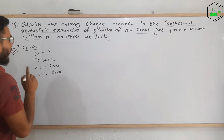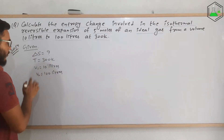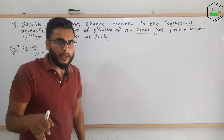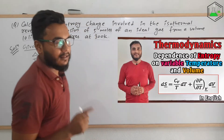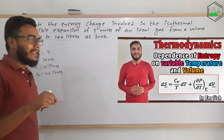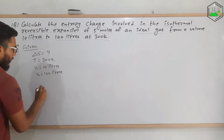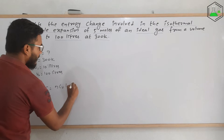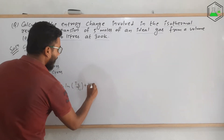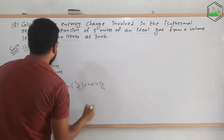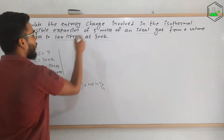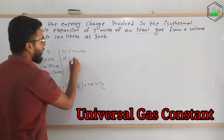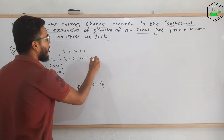So these are the given data. Now, we have a formula for calculating ΔS when V1, V2, T1, and T2 are given — that is, the dependence of change in entropy on temperature and volume for an ideal gas. I have already made a video about that; you can check the link in the description below. That formula is: ΔS = nCᵥ ln(T2/T1) + nR ln(V2/V1). Also, n = 5 moles is given, and R = 8.314 J/mol/K.